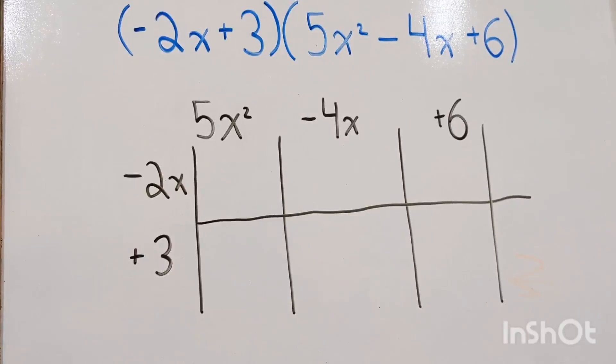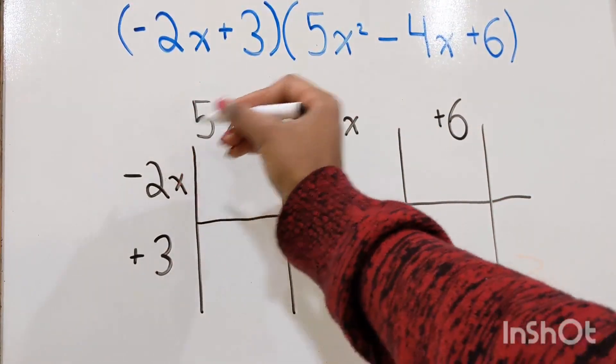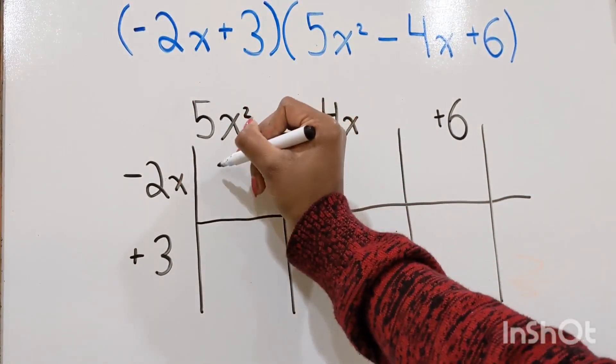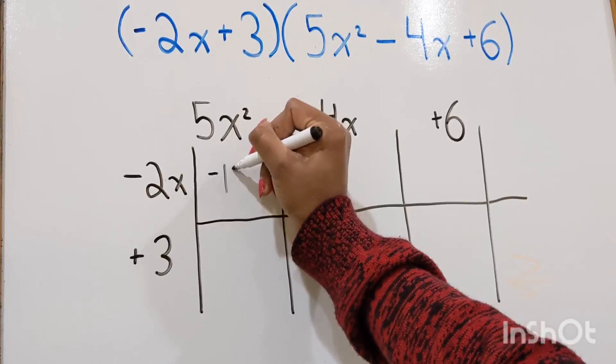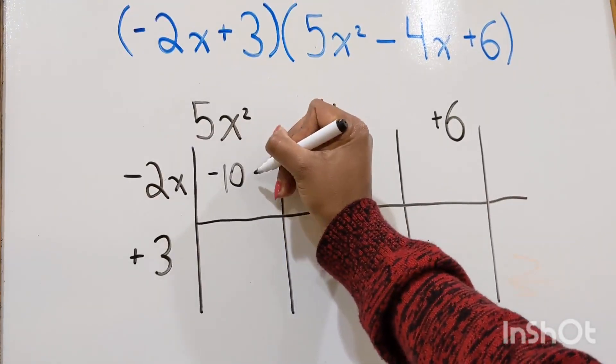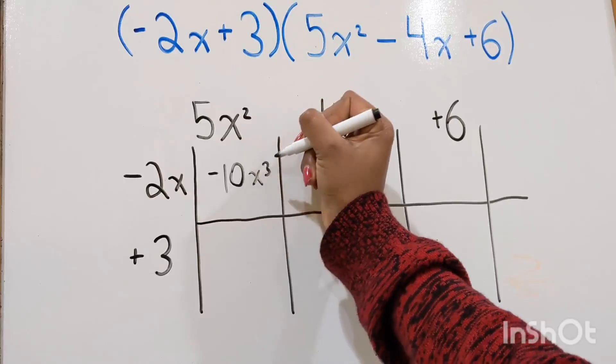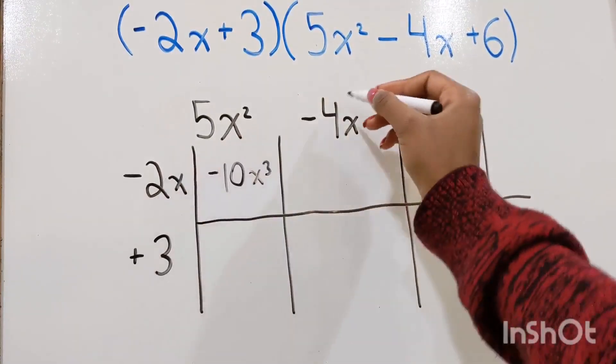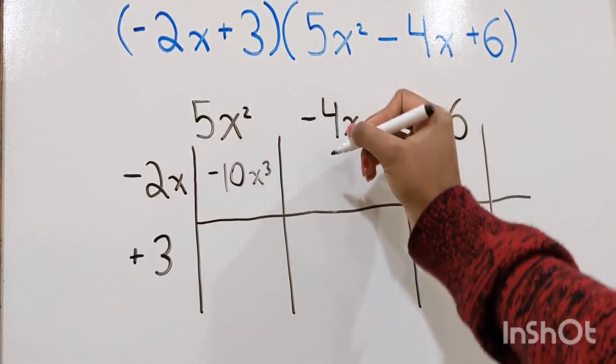So here's your box. So first you multiply these two and put it in this box. And then multiply this with this. So you put it like this.